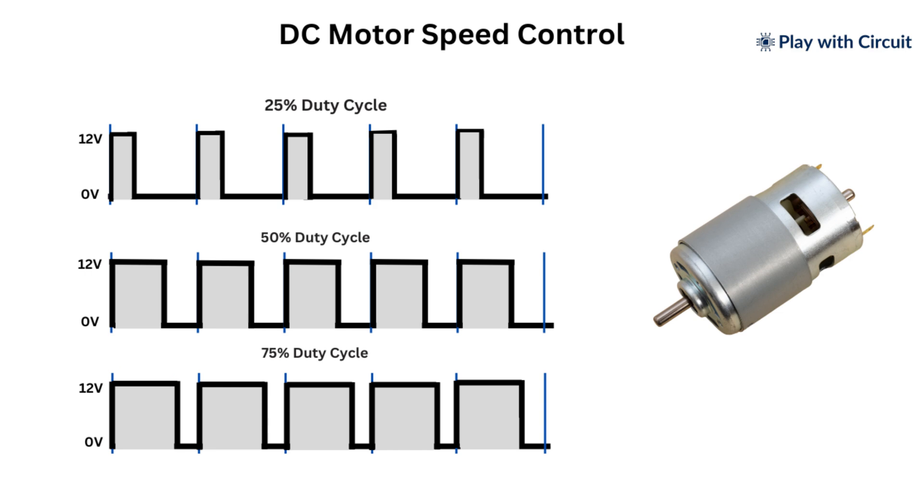By regulating the duty cycle we can effectively control average power supplied to the DC motor. A higher duty cycle means higher average power resulting in faster motor speed. A shorter duty cycle means lower average power resulting in slower motor speed.